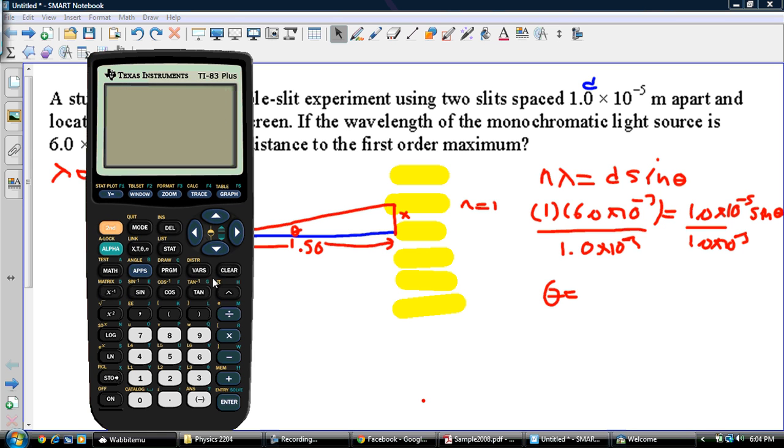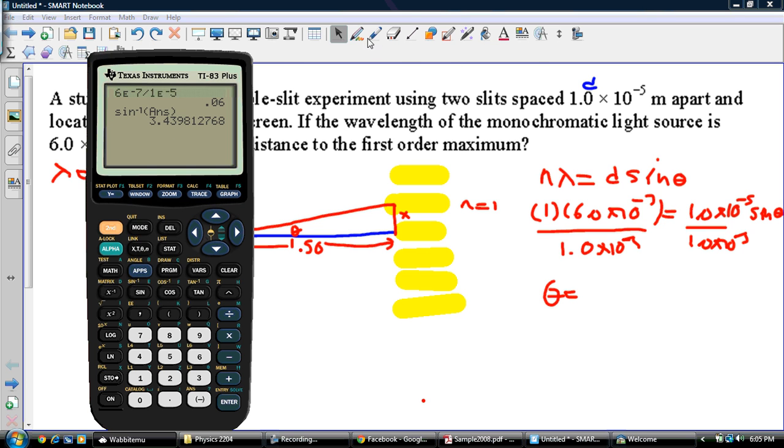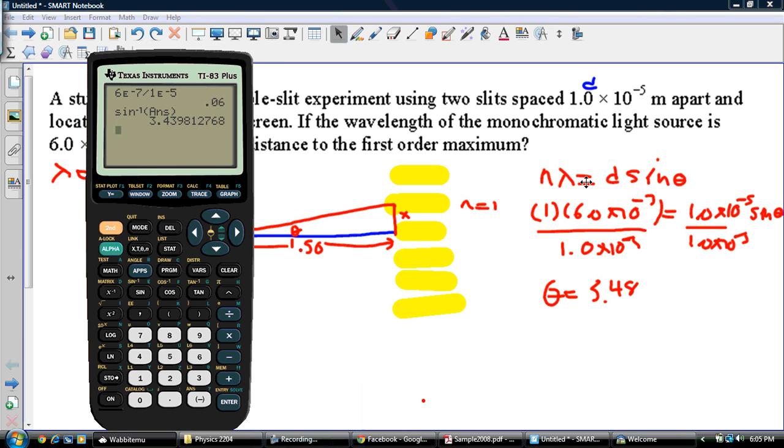So I'm going to have 6 exponent negative 7, divided by 1 exponent negative 5, enter. So that's going to be 0.06. So it was second function sine, second function answer. And we get an angle of 3.44 degrees.